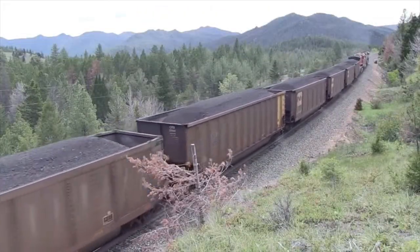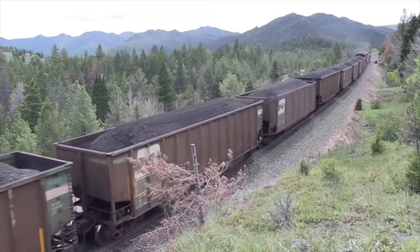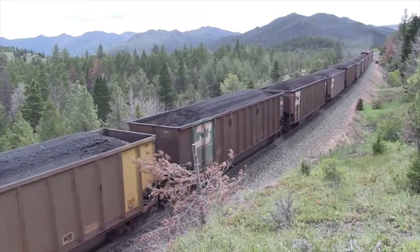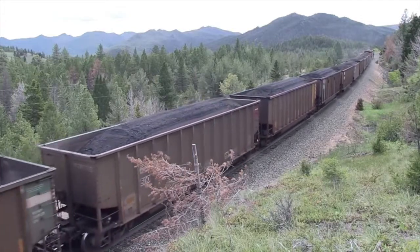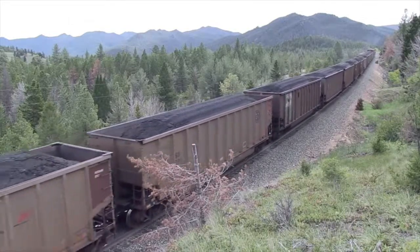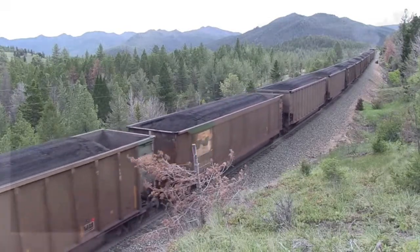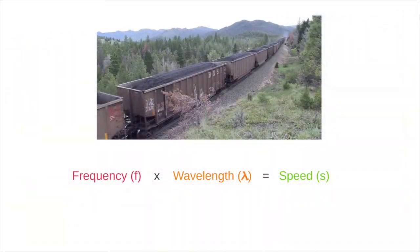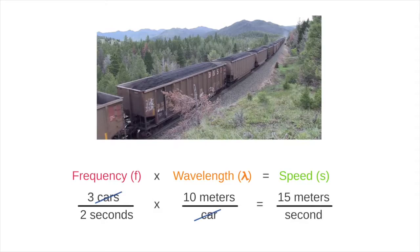It might help to think of an analogy with a moving train. Say that instead of a repeating wave, we have a train made up of repeating cars. We can count how often the cars pass a stationary object, like a tree. That's frequency. Say we count 3 cars per 2 seconds. And say that each car measures 10 meters long. That's wavelength. We now have enough information to calculate the speed of the train. 3 cars per 2 seconds times 10 meters per car. The car units cancel, and we get 15 meters per second.